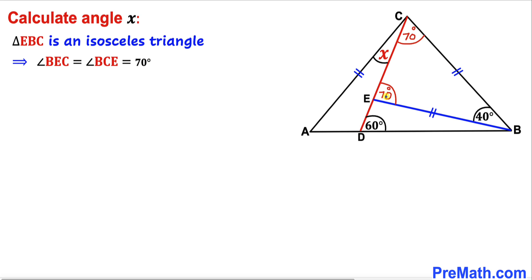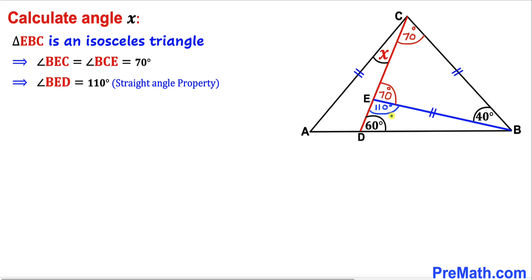Now let's recall the straight angle property — this whole angle from here to here is 180 degrees. We know this is 70 degrees, so this angle has got to be 110 degrees. Therefore this angle BED turns out to be 110 degrees.